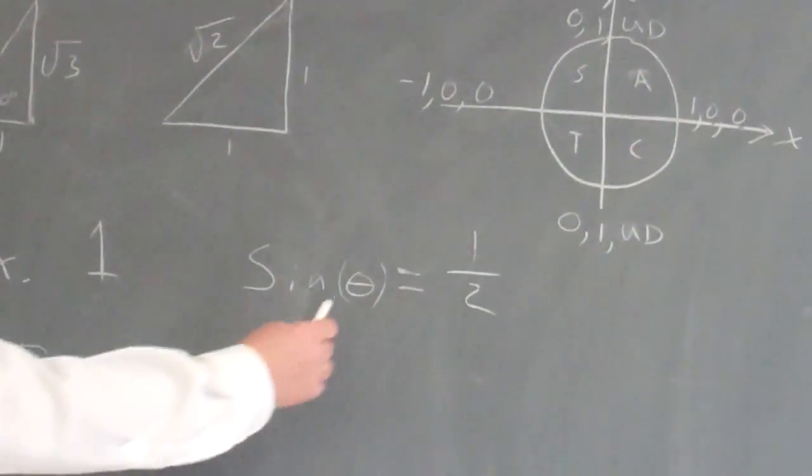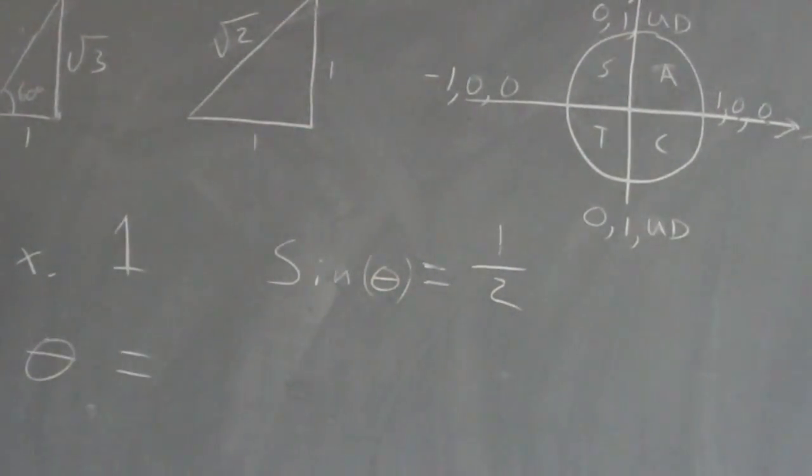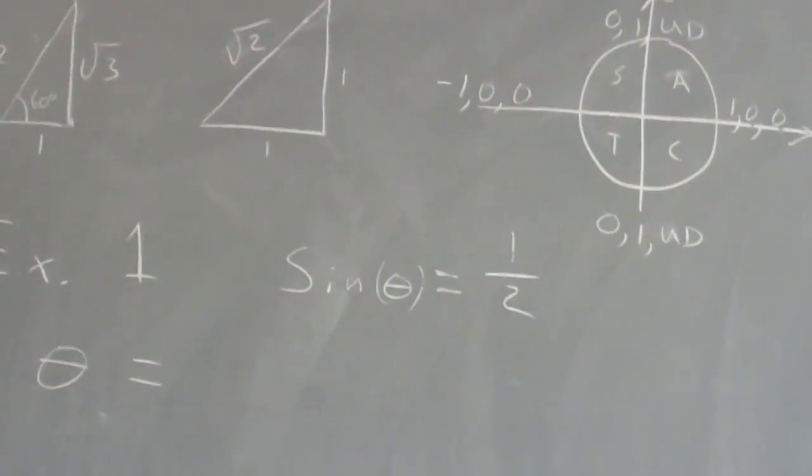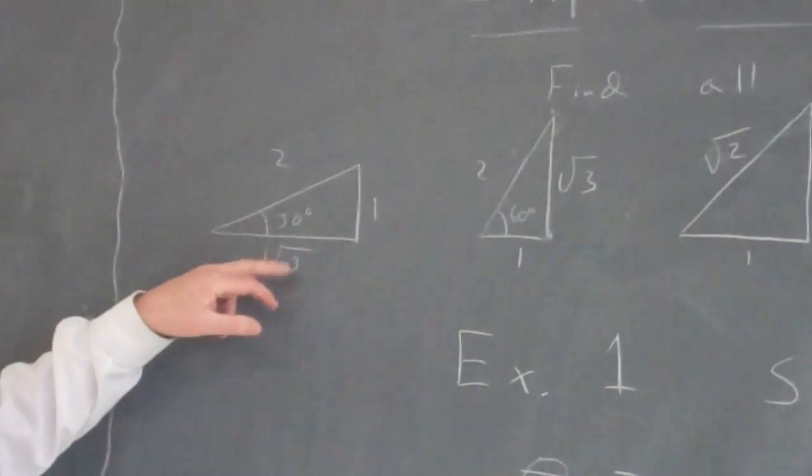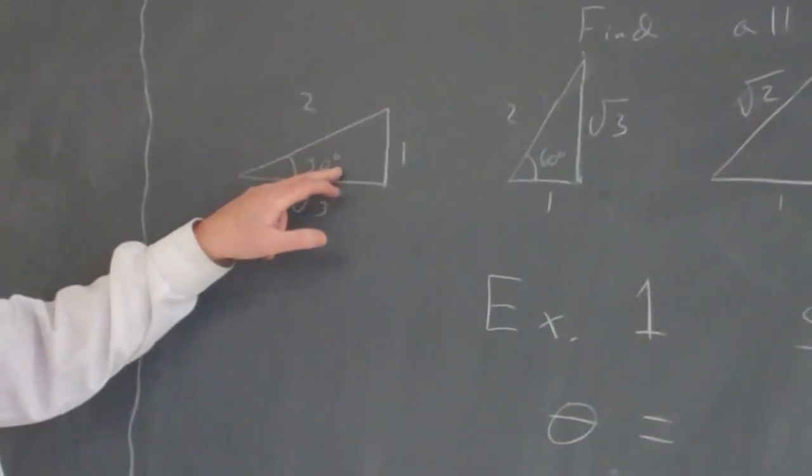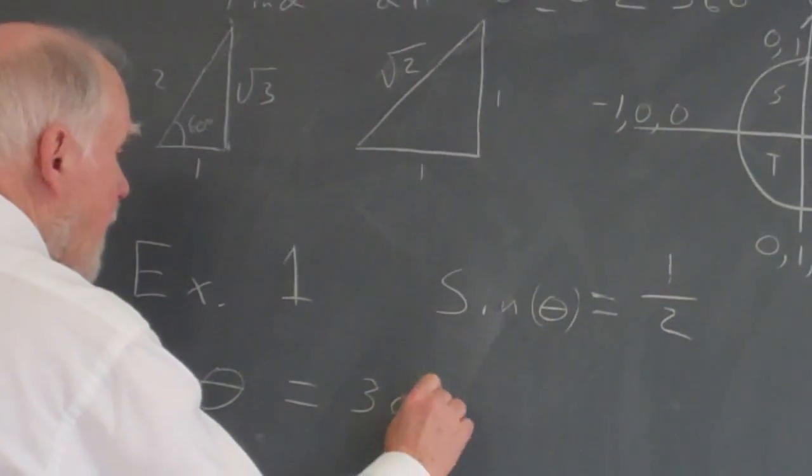Okay, so I want to find out what the sine of what angle will give me 1/2, and I want to find all theta between 0 and 360. Well, the first thing I know is that I look over here at this 30 degree triangle, and if sine is opposite over hypotenuse, so 30 degrees is certainly an answer. The sine of 30 degrees is 1/2.